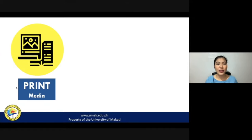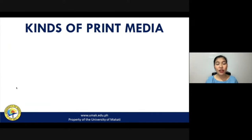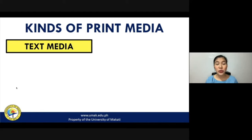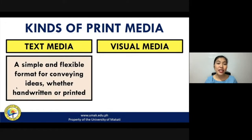Let us first discuss what print media is. It is described as a kind of media consisting of paper and ink. More often than not, this type of media is reproduced in a printing process that is traditionally mechanical in nature. There are two major kinds of print media: text media and visual media.